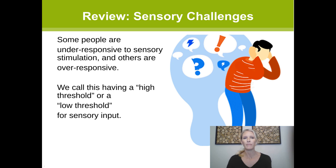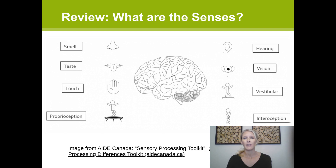We discussed four different sensory styles and strategies related to each. Today we'll focus on strategies for all children and adults as they relate to each sensory system. Our common senses include smell, taste, touch, hearing and sight, as well as proprioception — related to body position and muscle control — and our vestibular sense, related to movement and balance in relation to gravity. Finally, our internal sense of interoception helps us understand body processes like heart rate, breathing and hunger.